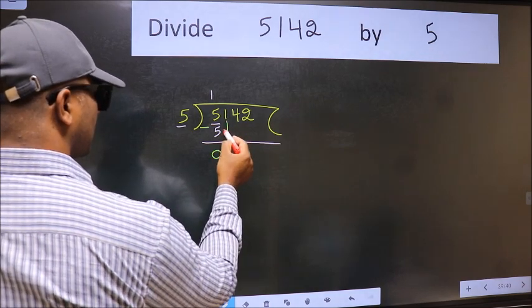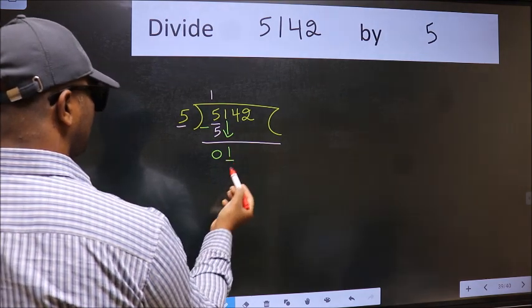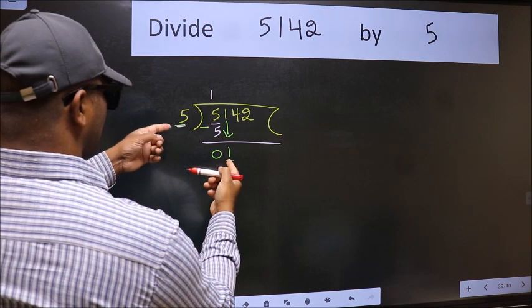After this, bring down the beside number. So 1 down. Now here we have 1 and here 5. 1 is smaller than 5.